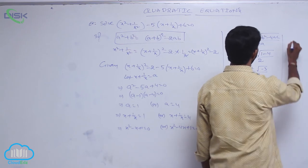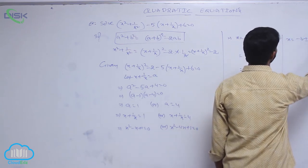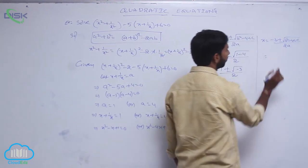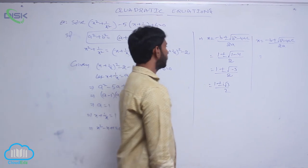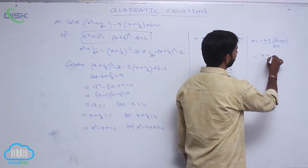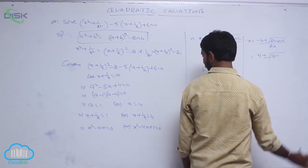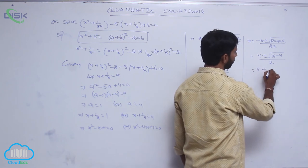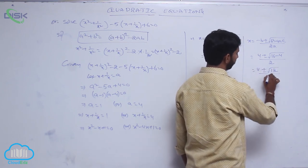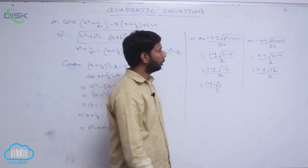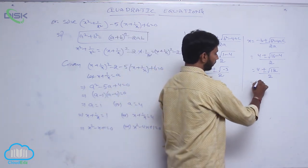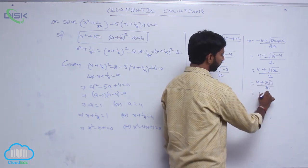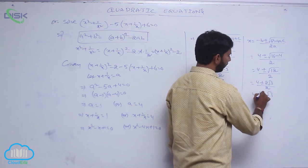Applying the same formula to the second equation with b equal to minus 4: x equals 4 plus or minus square root of 16 minus 4 by 2, equal to 4 plus or minus square root of 12 by 2. Since 12 equals 4 times 3, square root of 4 is 2, this gives 4 plus or minus 2 root 3 by 2, which simplifies to 2 plus or minus root 3.